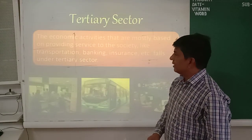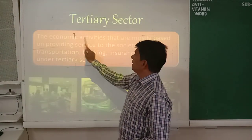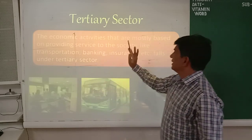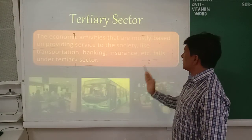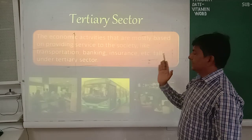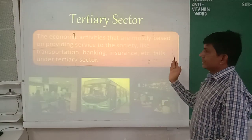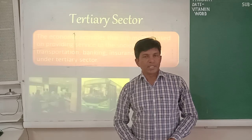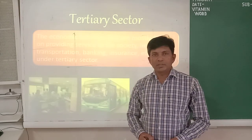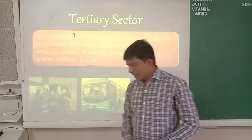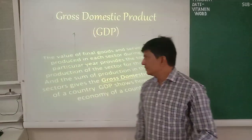With the help of this slide, let me explain in detail. The economic activities that are mostly based on providing services to society — like transportation, banking, insurance, etc. — come under the tertiary sector. So these three are the major sectors of the economy: the primary sector, the secondary sector, and the tertiary sector.